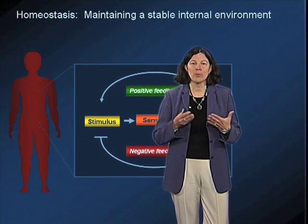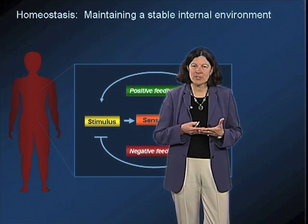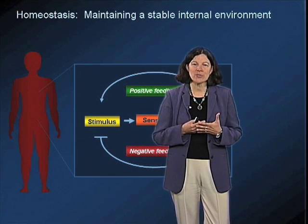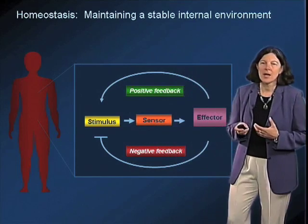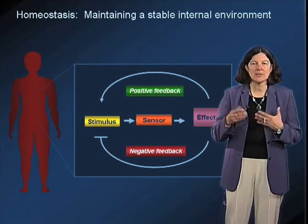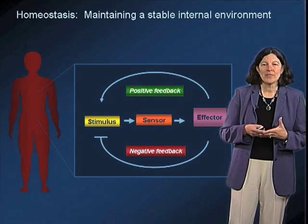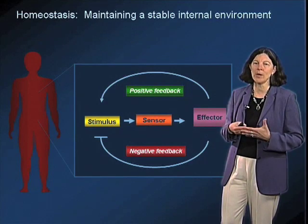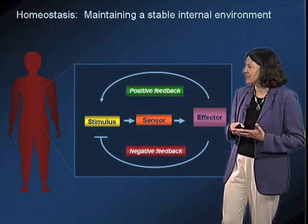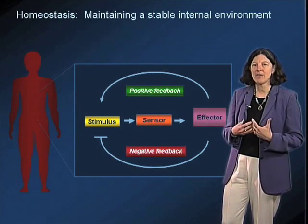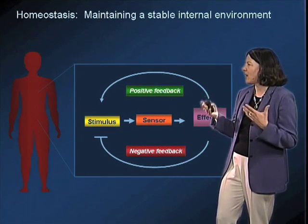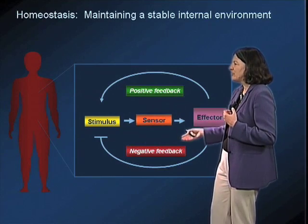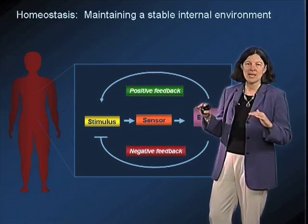We know that cells are really sensitive to a lot of different types of cues — chemical cues as well as mechanical cues — and what we're trying to understand is how cells and organisms maintain a stable environment in the face of all of this external stimulation. The concept of homeostasis is one that physiologists have been working on for many decades. There is a model cassette in which a stimulus impacts a sensor and an effector pathway, and via a combination of positive and negative feedback, controls the environment and maintains stability.